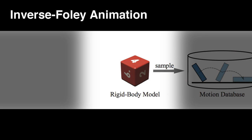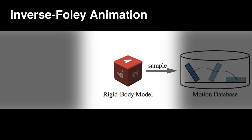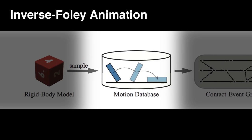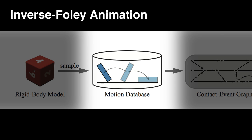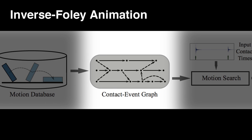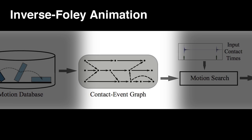We first build a physics-based model of the rigid body we seek to animate. Next, we pre-compute a database of randomly sampled rigid body motions hitting the ground, where each rigid body simulation is interpreted as a sequence of contact events. By finding similar contact events, we build a contact event graph, which can be traversed to synthesize rigid body motions of varying plausibility.